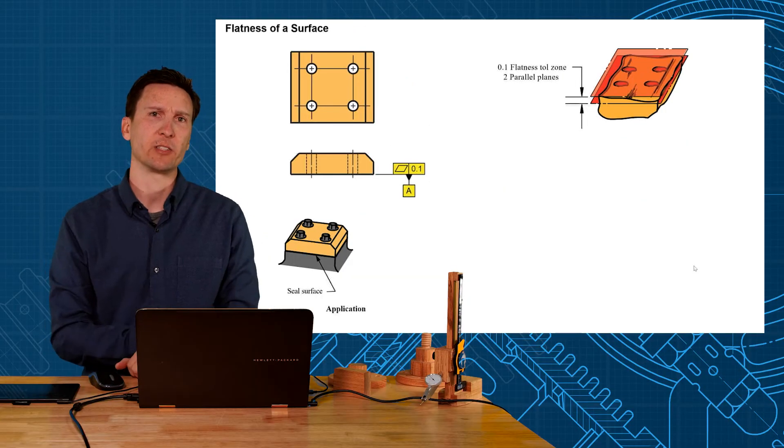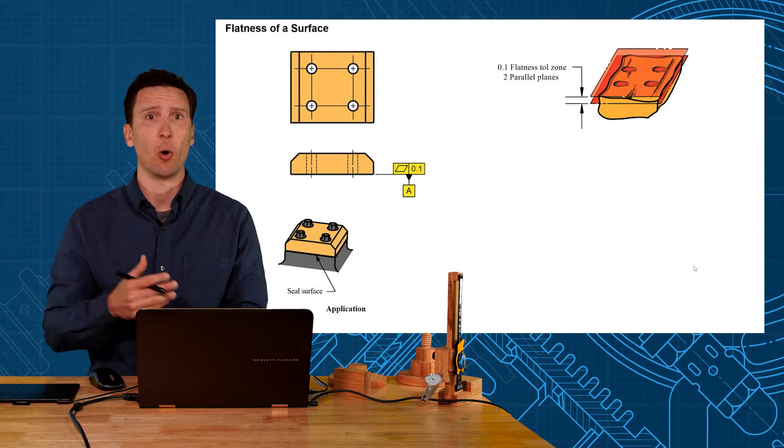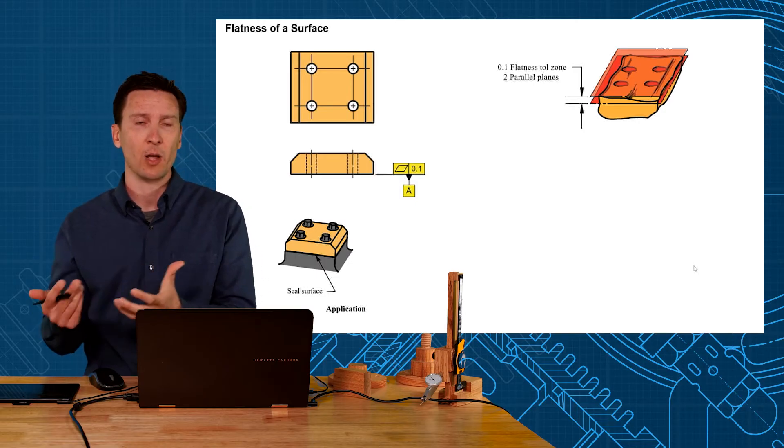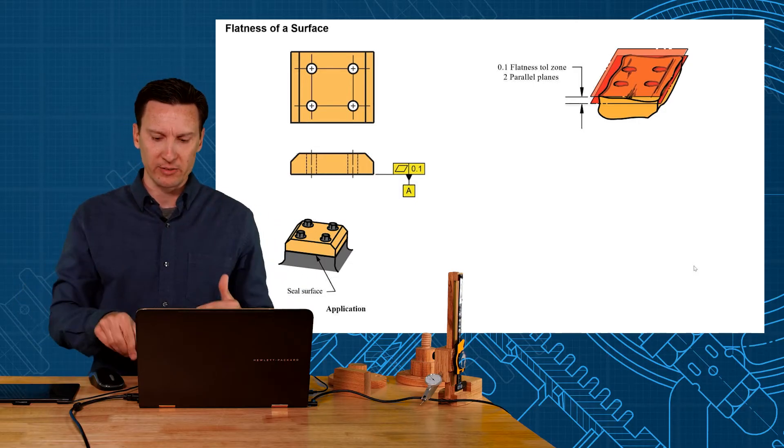Now where do we apply flatness tolerance? Usually it will be on sealing surfaces or qualifying a datum feature. Mounting surface is another place that we like to apply it.